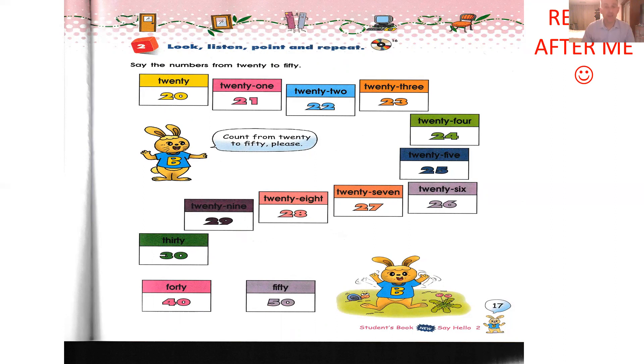Okay, so after 30, what is it? After 30, 31, 32, 33, 34, 35, 36, 37, 38, 39, 40. Okay, let's go together. 41, 42, 43, 44, 45, 46, 47, 48, 49, and 50.